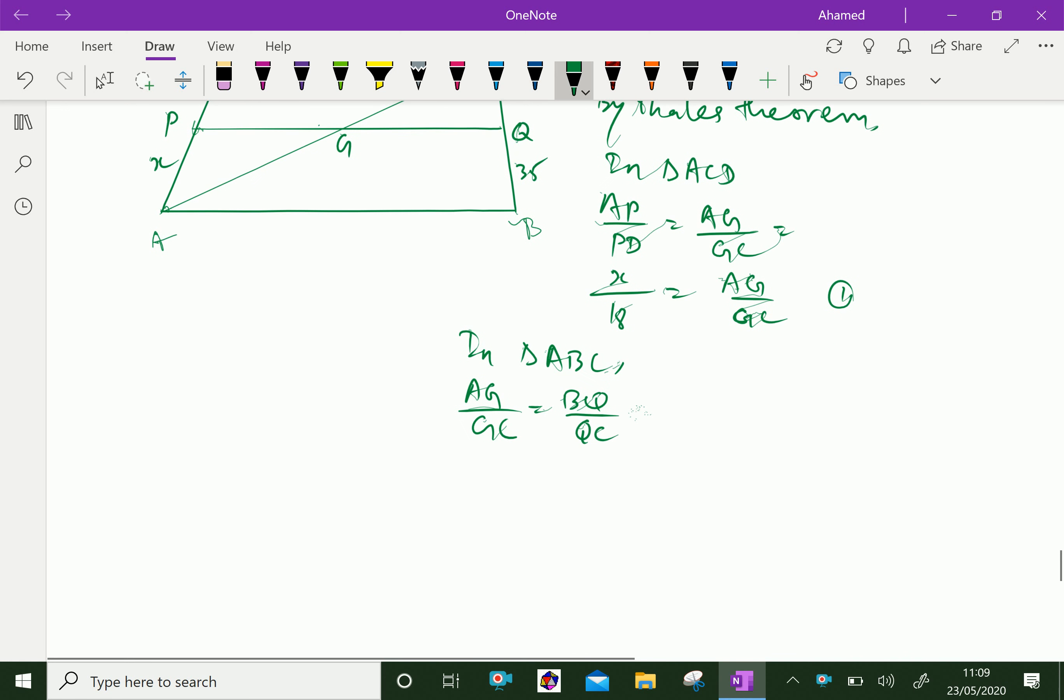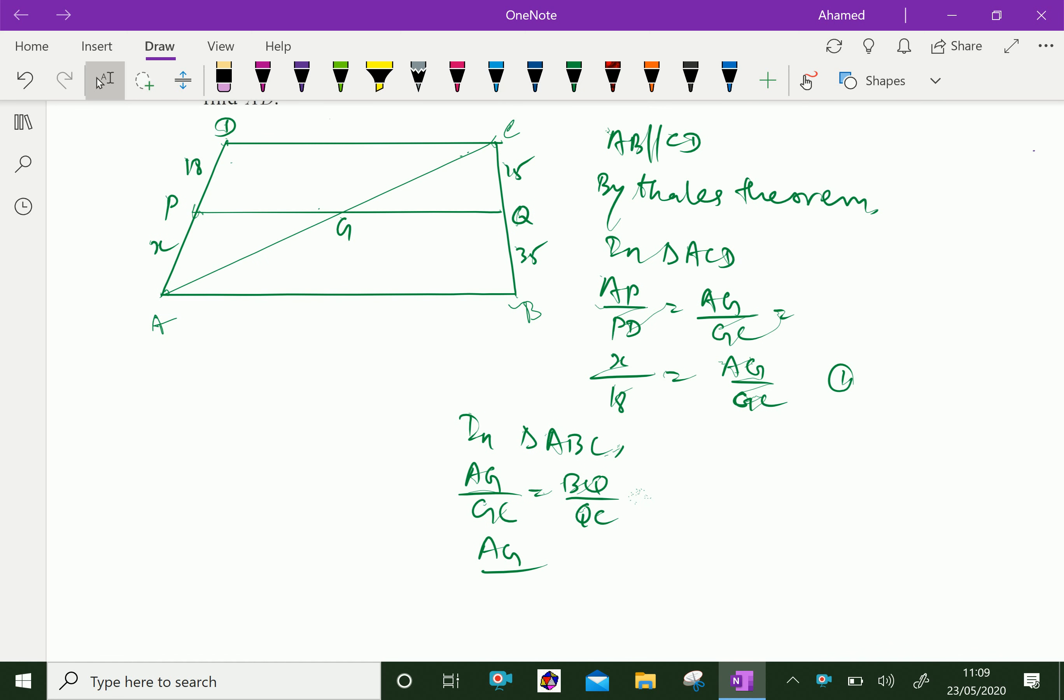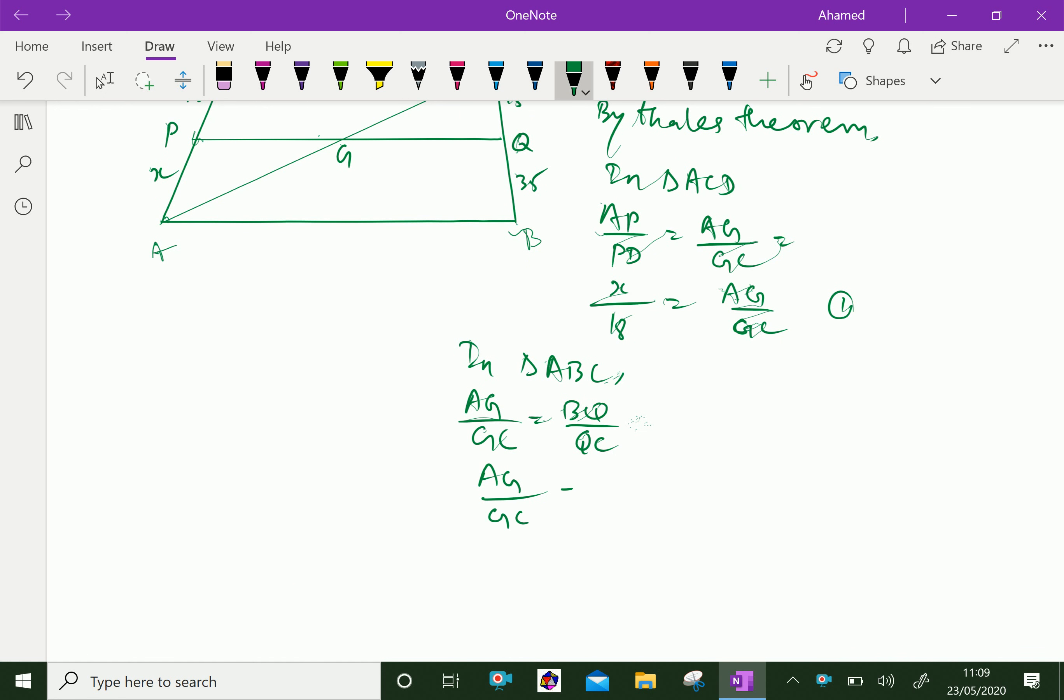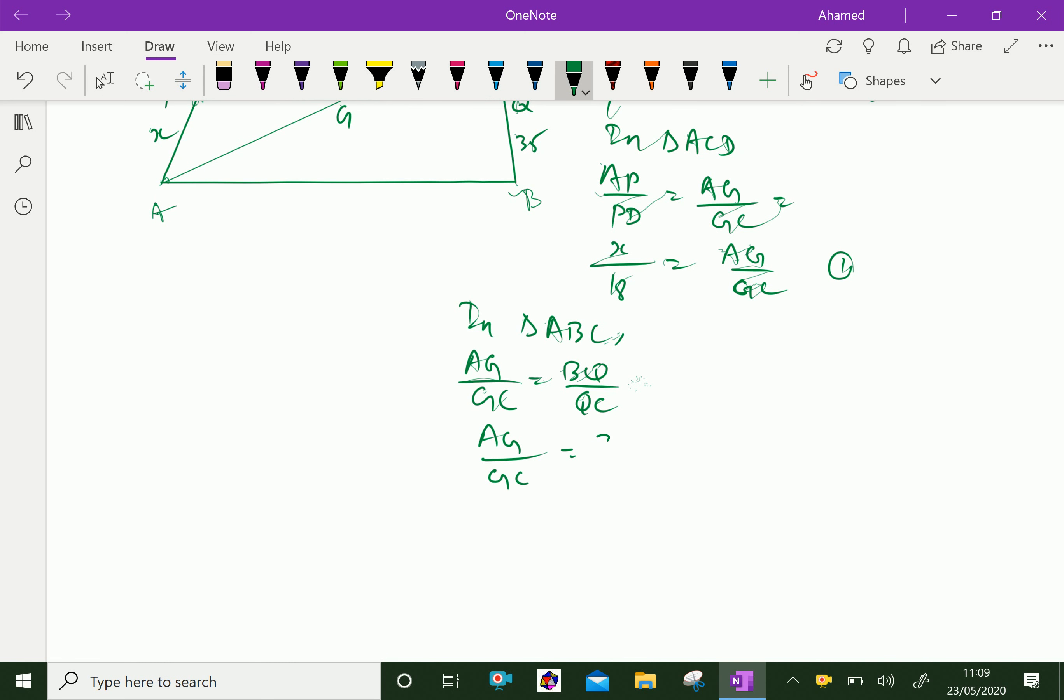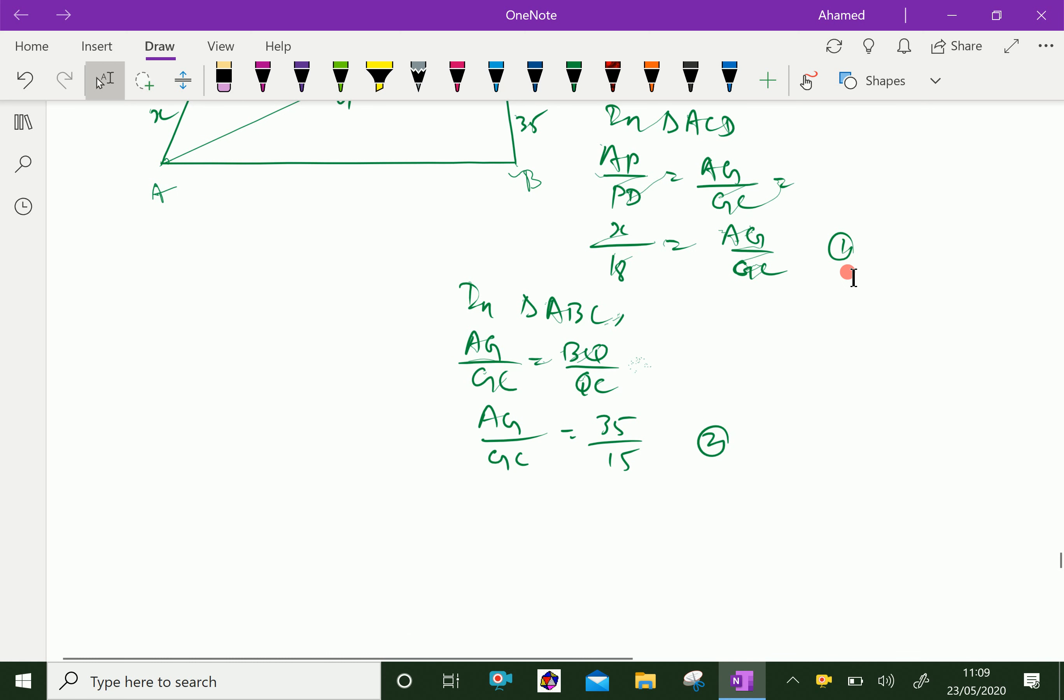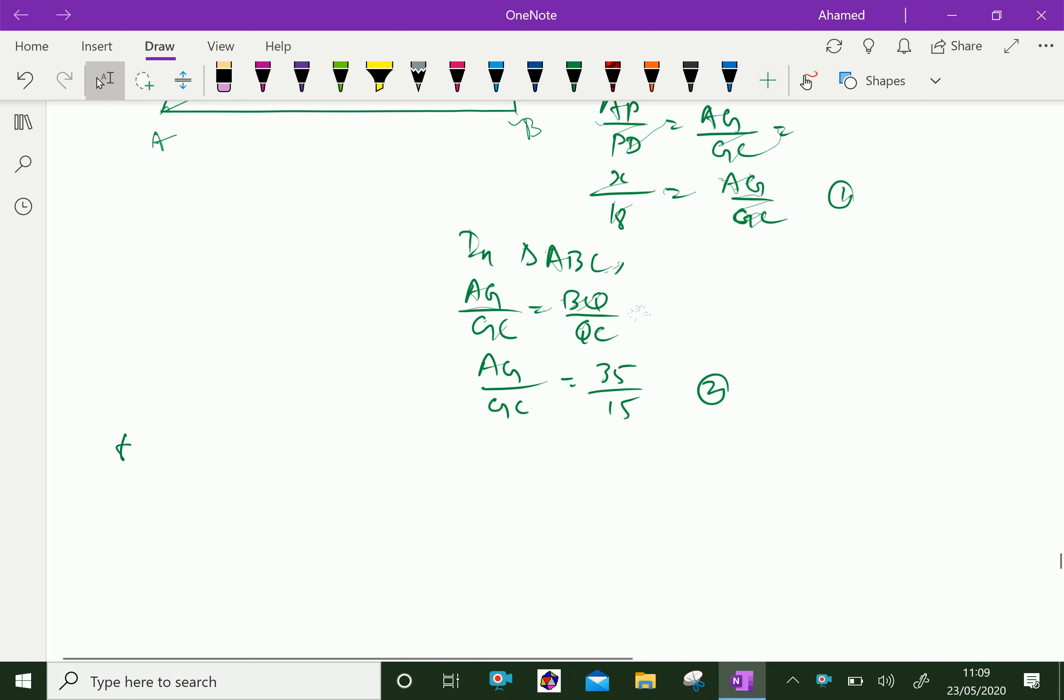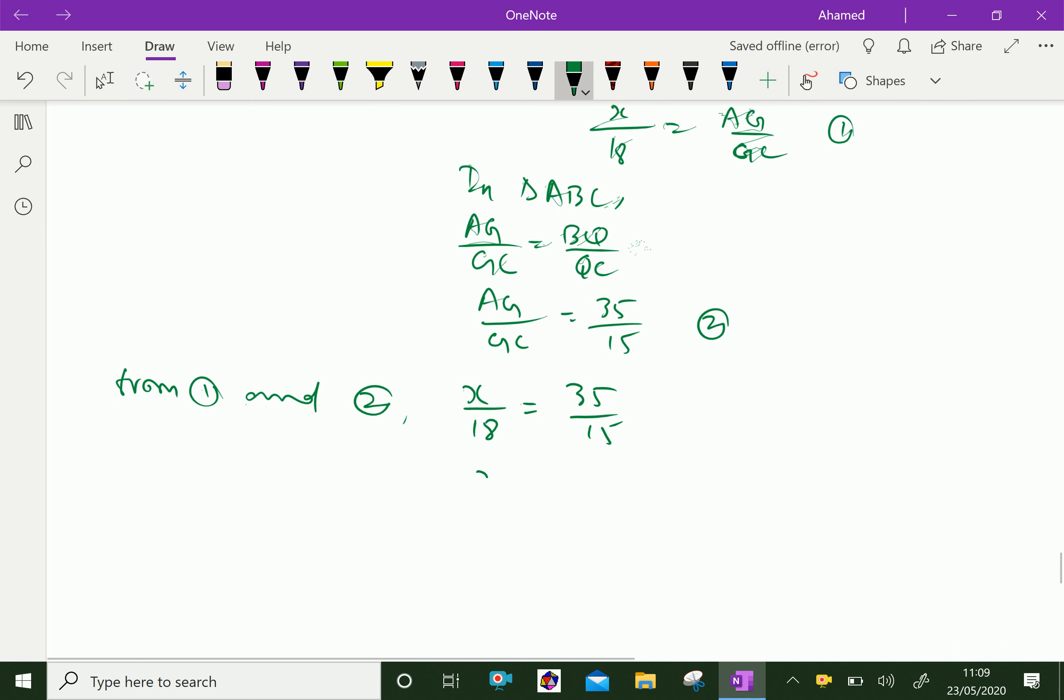Now, we can write the values. AG over GC, BQ is 35 over 15. Let it be 2. Here, from 1 and 2, we can equate AG over GC. Then, we can get X over 18 equal 35 over 15. Then, we can get X equal 35 over 15 into 18.